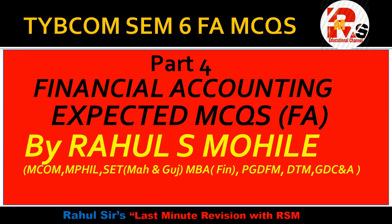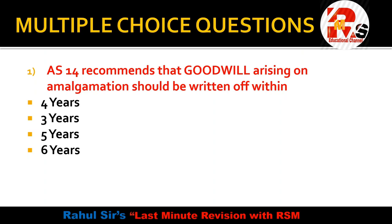Question 1 — for the 2021 examination: Accounting Standard 14 recommends that goodwill arising on amalgamation should be written off within how many years? The options are 4 years, 3 years, 5 years, and 6 years. The correct answer is 5 years. AS-14 is the amalgamation accounting standard, and goodwill arising on entry of assets and liabilities must be written off within 5 years.